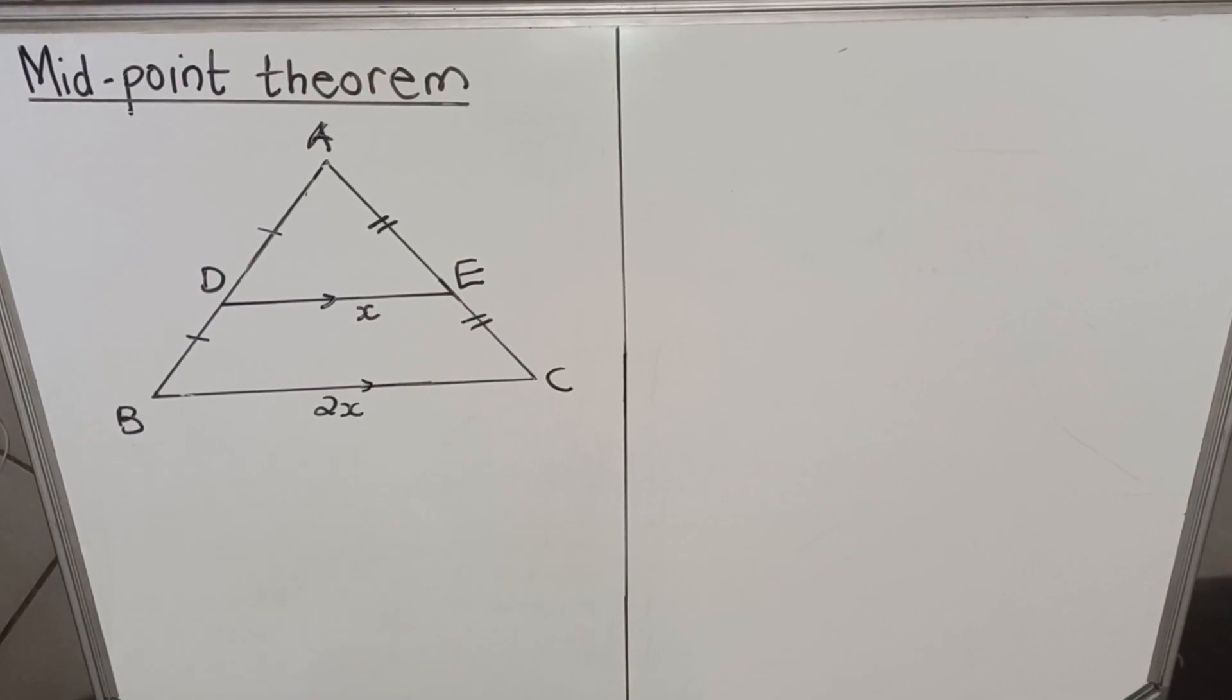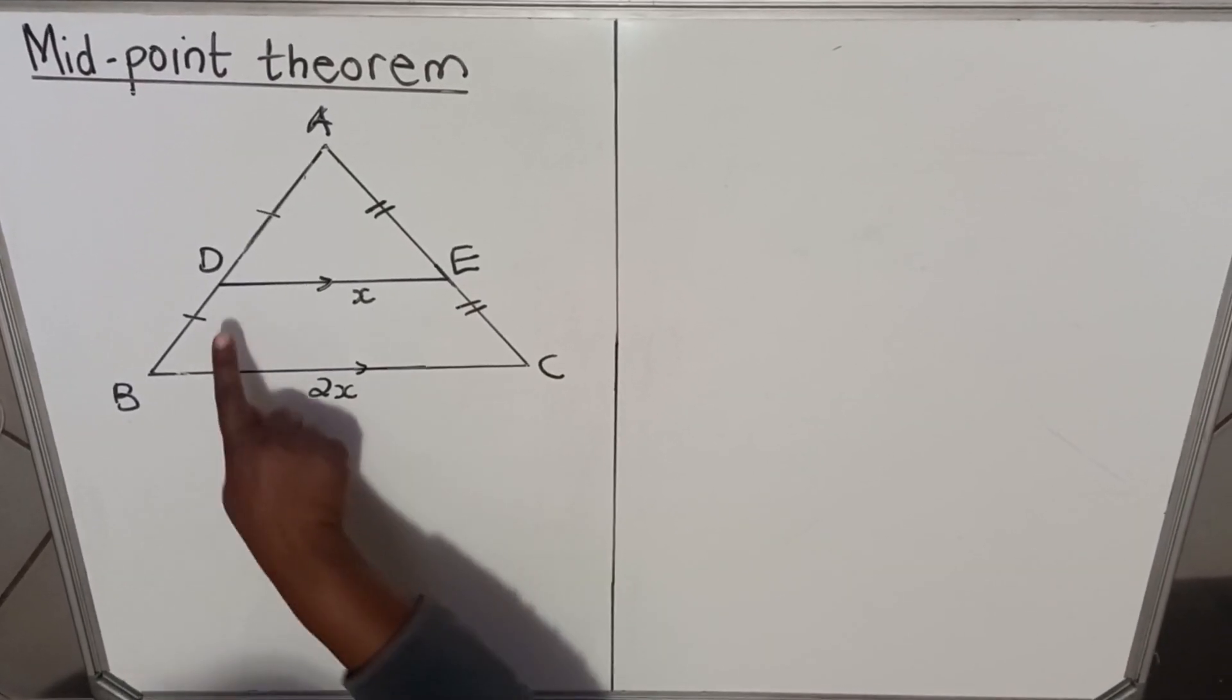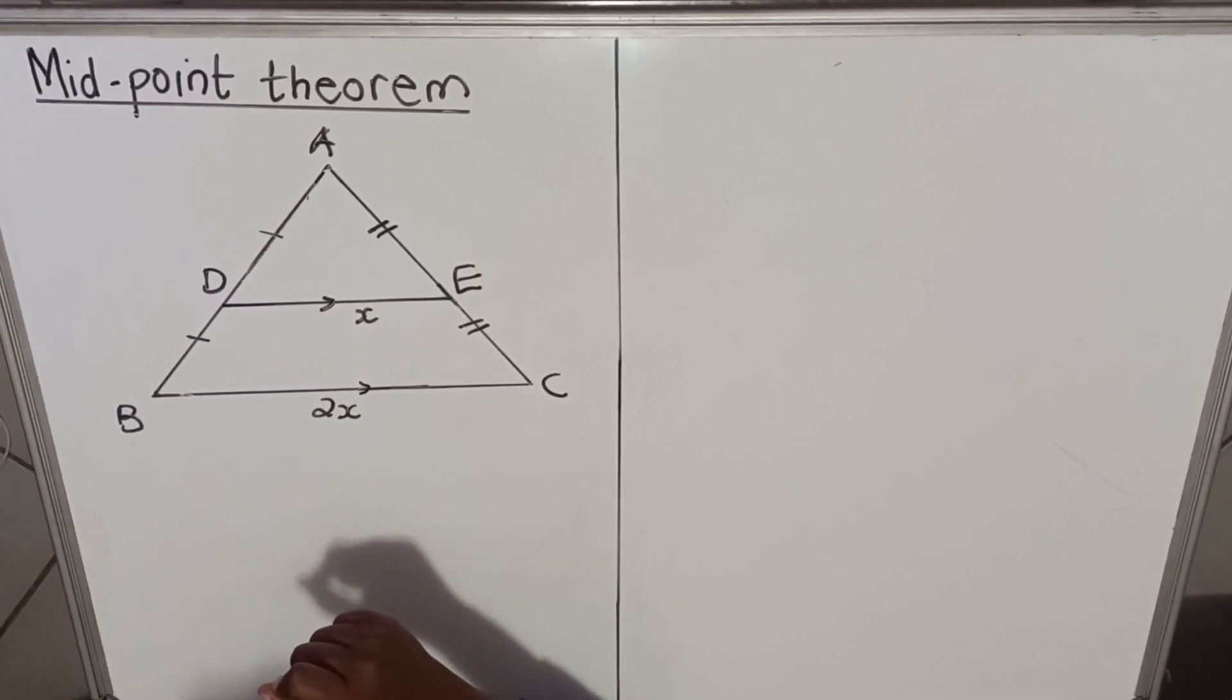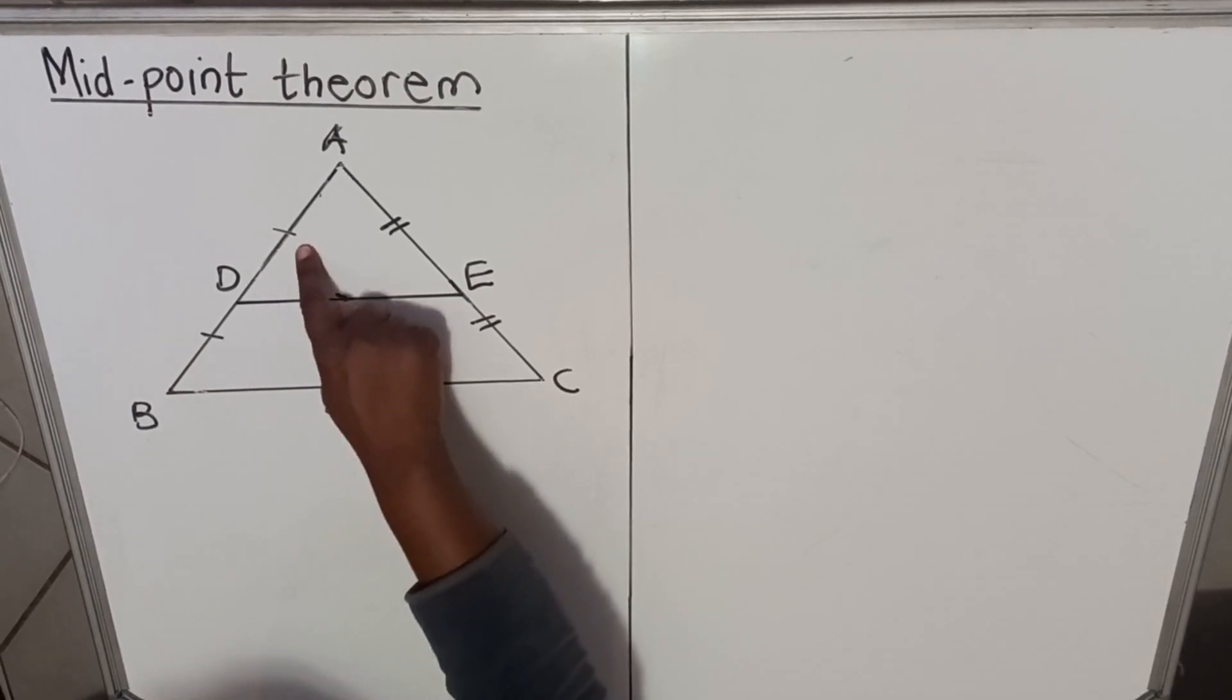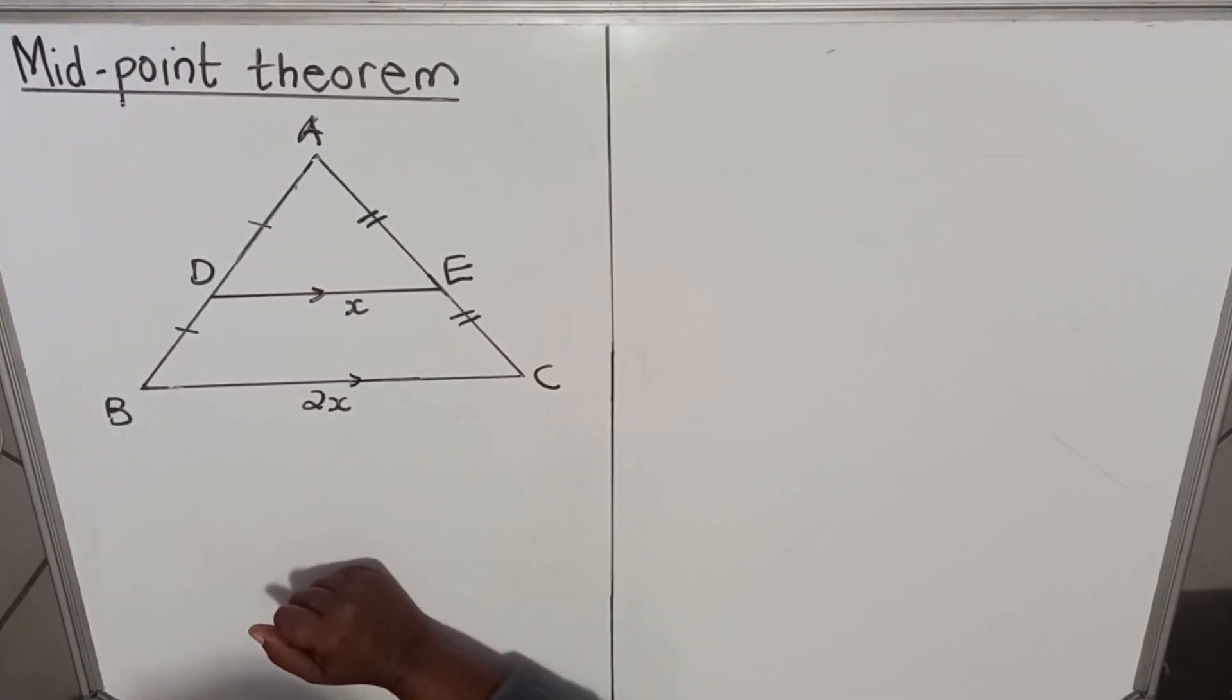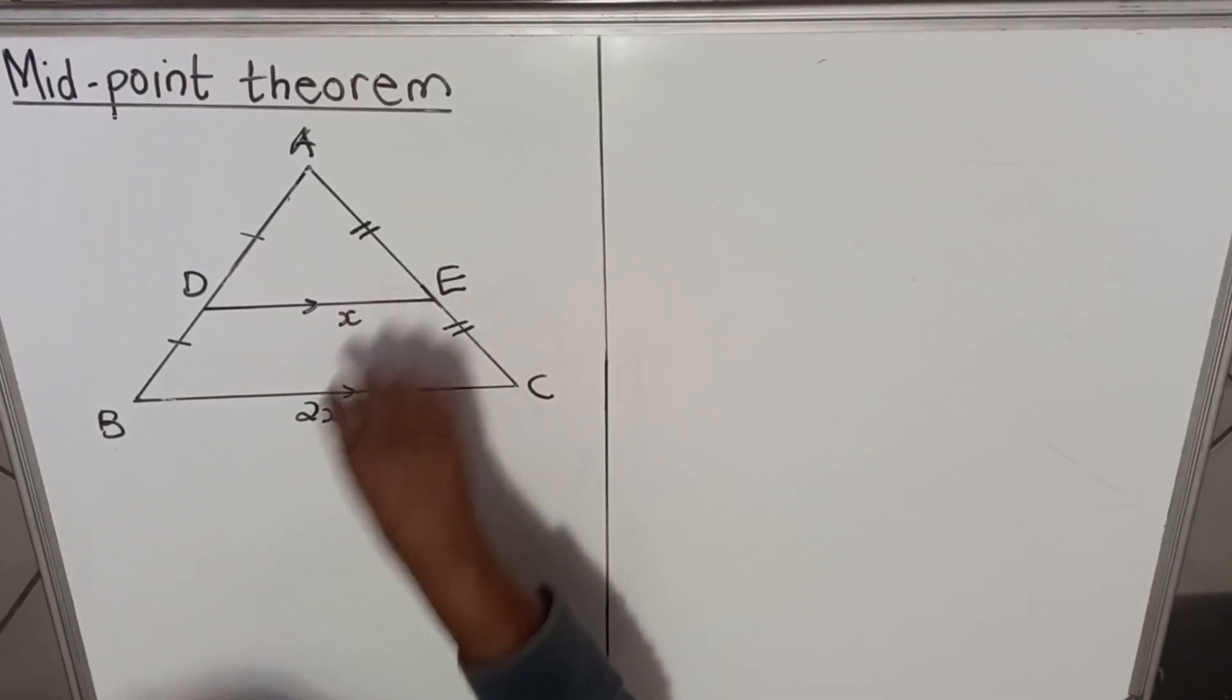So if you have that, this line DE is twice DE. What will be given in an exam: you'll be given either one midpoint and parallel lines, then you can conclude the other side is a midpoint. Or you'll be given two midpoints with no parallel lines, then you'll conclude that these two lines are parallel.